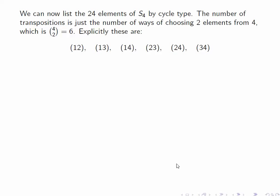Well, there's certainly a lot of transpositions. For each pair of numbers out of the set {1, 2, 3, 4}, we have a transposition that flips those two elements and leaves the other two fixed. So the number of these is exactly the number of ways of choosing two elements from 4, which is 4 choose 2, or 6. And here are those six elements.